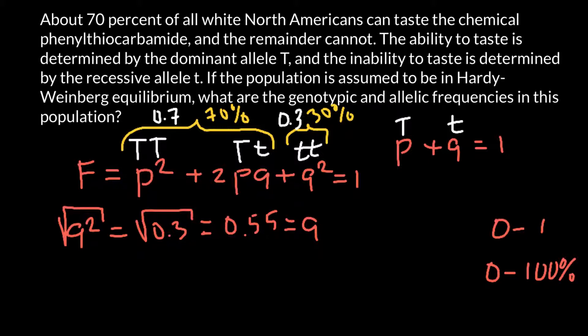Now we know that the frequency of q is 0.55. And as you see, we instantly know the frequency of the dominant allele p, which is 0.45. If we add these two numbers, we are going to get one.